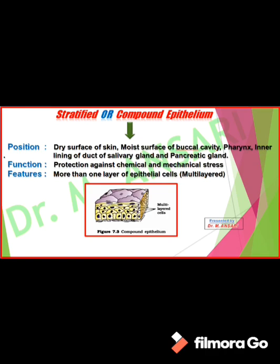In stratified or compound epithelium, the epithelial cells are arranged in more than one layer — three to four layers. The first layer of cells present on the basement membrane is called germinal epithelium, because germinal epithelium has the ability for cell division. It produces new cells and keeps them in this layer, while old cells move to upper layers.